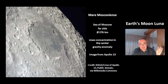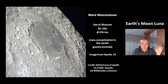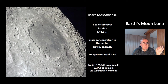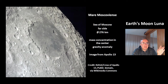This is Mare Moscoviense, the Sea of Moscow, also on the far side. It has a size of 276 km, with a mass concentration in the center, making it a gravity anomaly. This image was taken from the Apollo 13 mission.